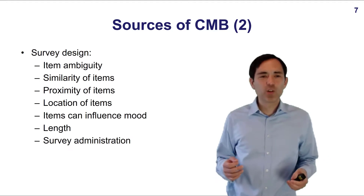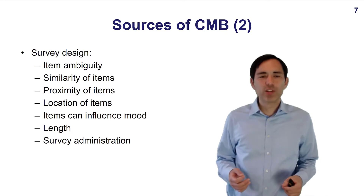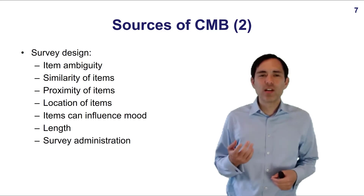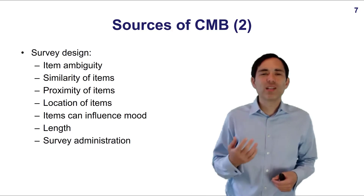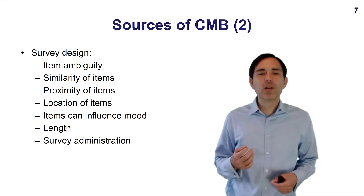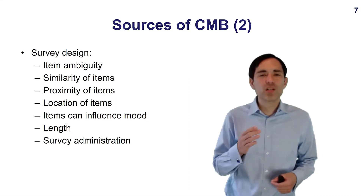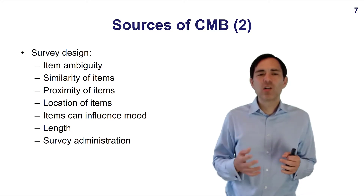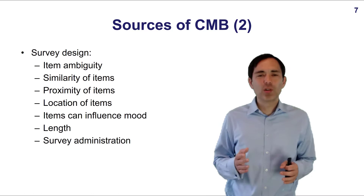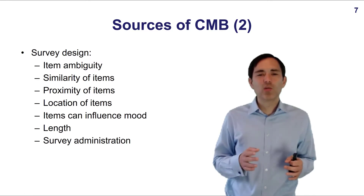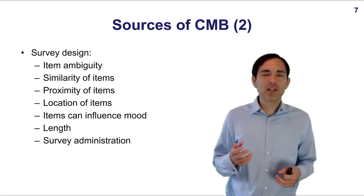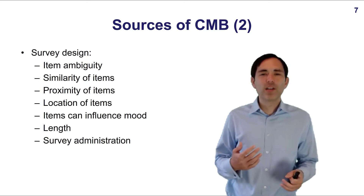Another set of problems could be related to survey design. Item ambiguity is one problem — items are not clearly phrased, so the respondent doesn't know what is actually meant and might interpret the question differently. Similarity of items is another problem — items are very similar and respondents just answer the same way. Proximity of items can also be problematic — items are so similar and close together, and independent and dependent variables follow one after the other, leading respondents to give the same responses.